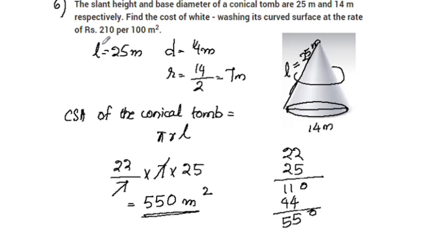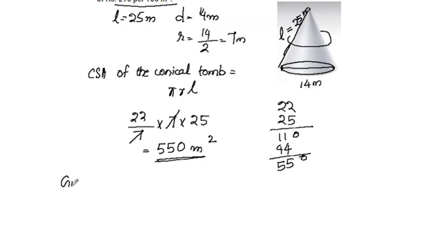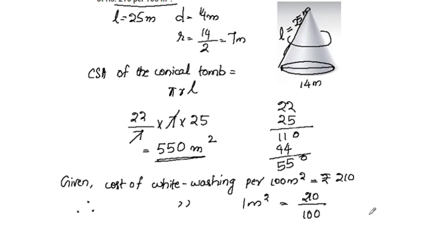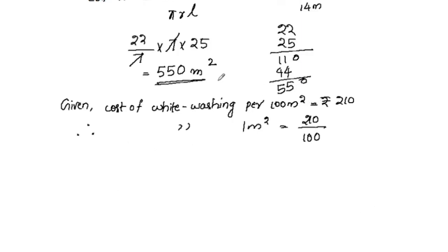The cost of whitewashing is Rs. 210 per 100 square meters. So the cost of whitewashing 1 square meter equals 210 divided by 100. Therefore the cost of whitewashing 550 square meters equals 550 multiplied by 210 divided by 100, which gives 55 × 21.